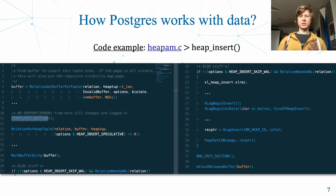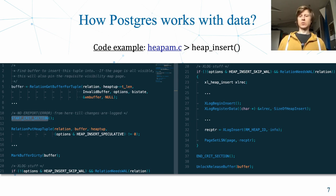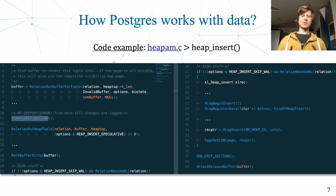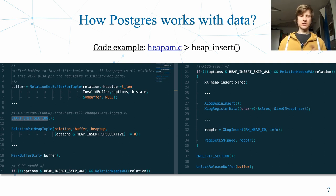From a source code perspective it looks like this — an example from heap insert, a general method for inserting data into a relation. We take a buffer, start a critical section where we modify the page, write xlog information into the write-ahead log for durability, mark the buffer as dirty, put the LSN in our page, end the critical section, unlock the buffer, and return control to the buffer manager.